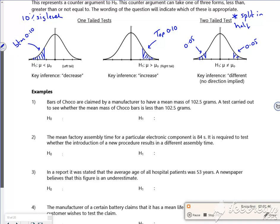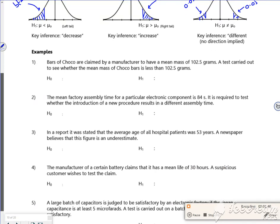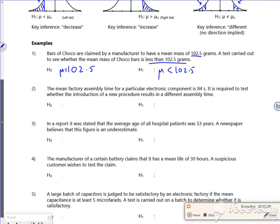There's some examples here for setting up. It says bars of chocolate by a manufacturer to have a mean of 102.5 grams. We want to see if it's less than, so that makes sense doesn't it? Should really have a μ equals there shouldn't I? The μ is less than 102.5.